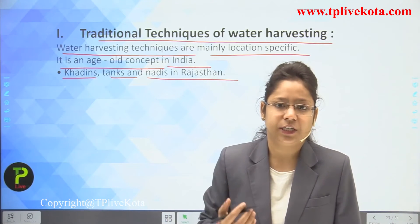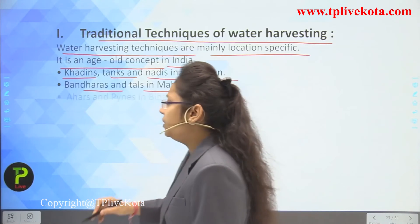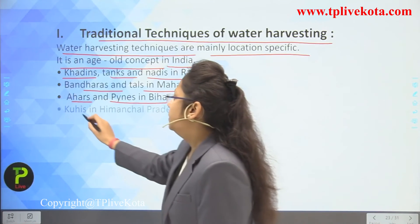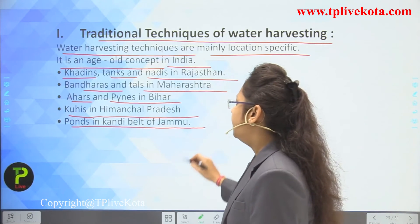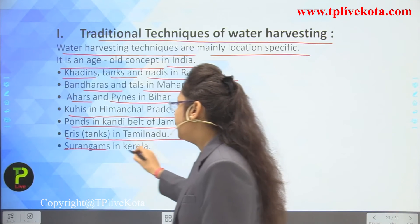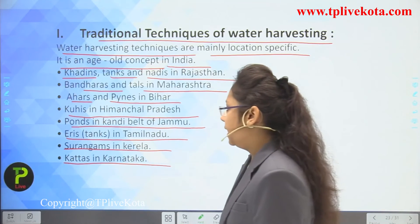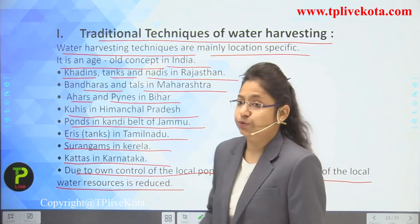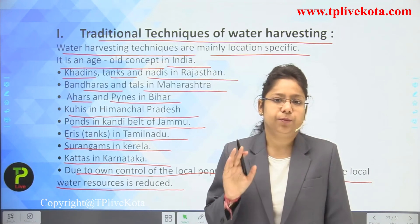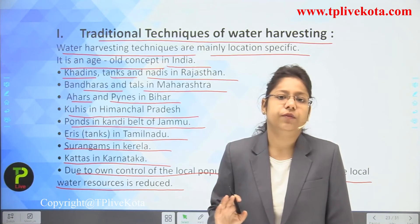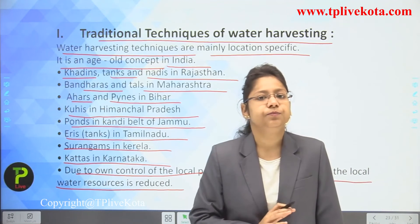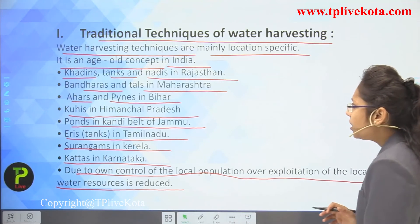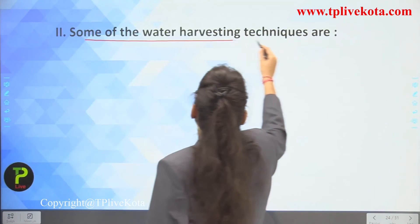Traditional water harvesting systems include: Khadins, tanks, and nadis in Rajasthan; Bandharas and tals in Maharashtra; Ahars and pynes in Bihar; Kuls in Himachal Pradesh; ponds in the Kandi belt of Jammu; Eris tanks in Tamil Nadu; Surangams in Kerala; and Kattas in Karnataka. Due to local population control, over-exploitation of local water resources is reduced when people use water sustainably.